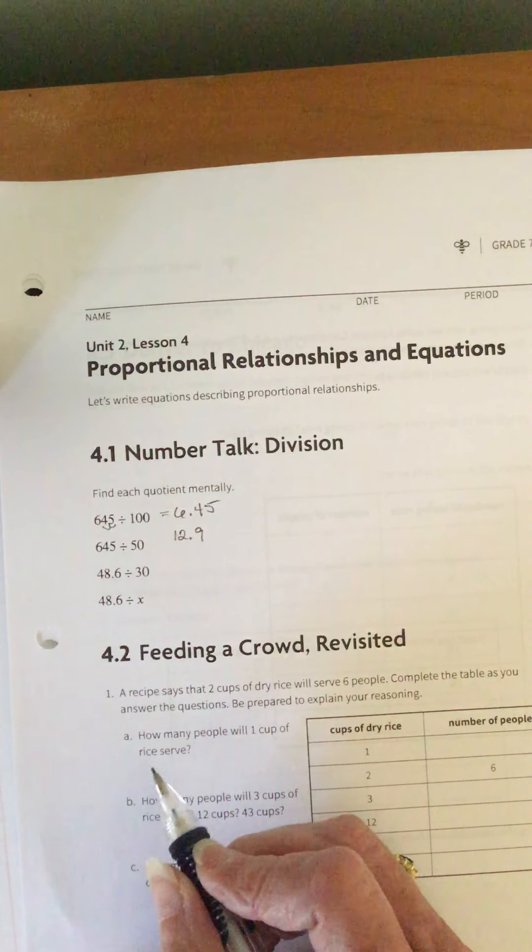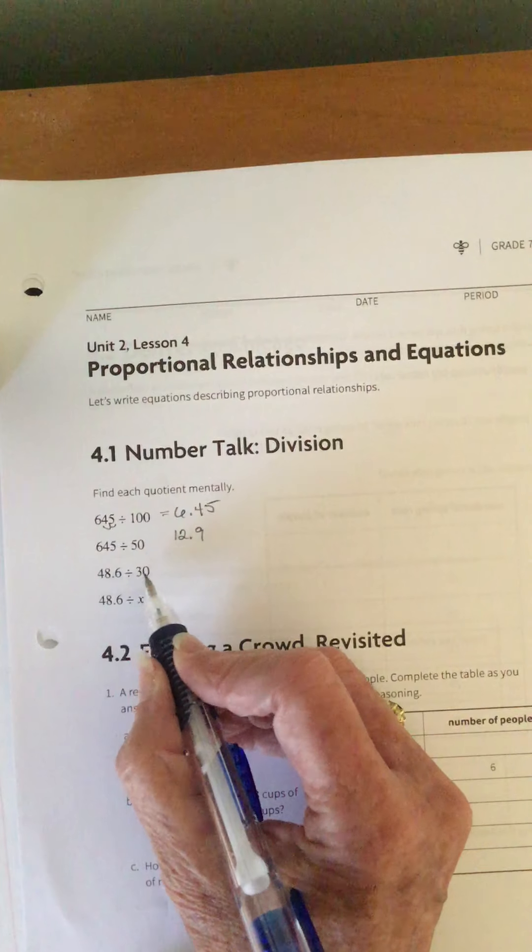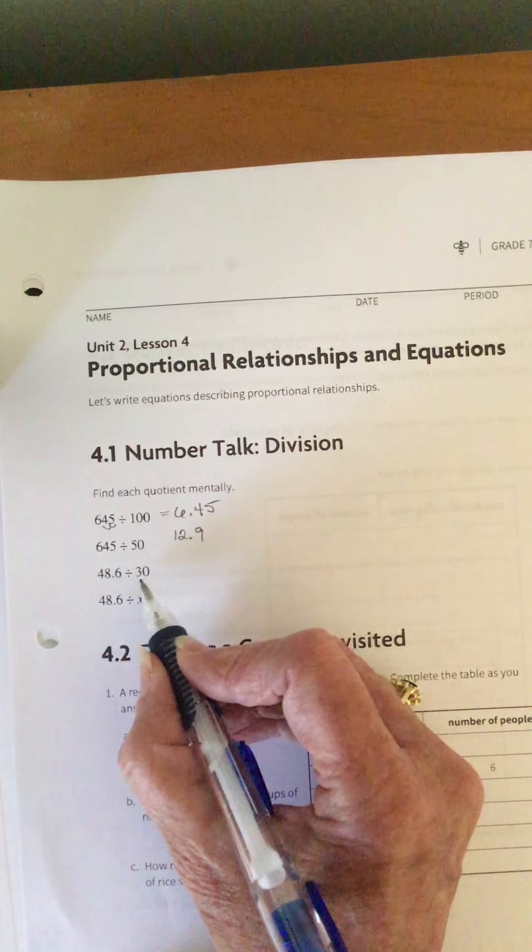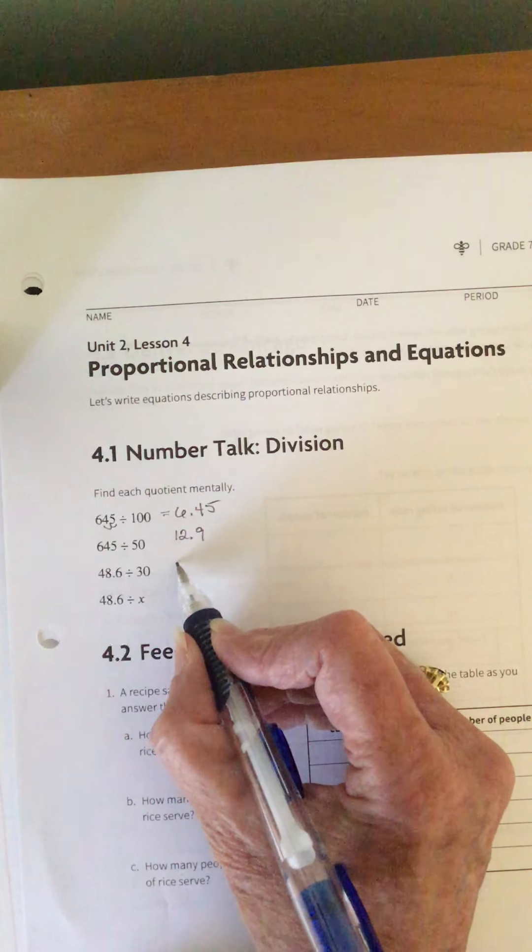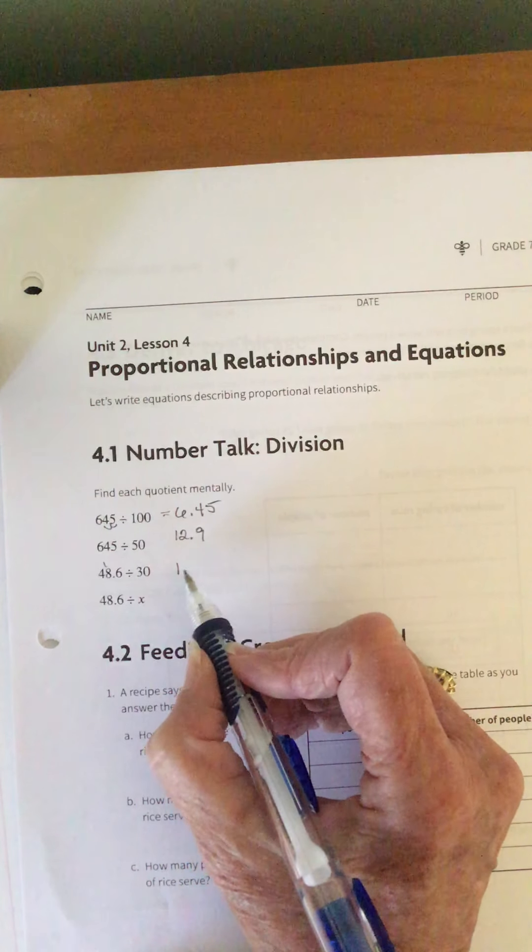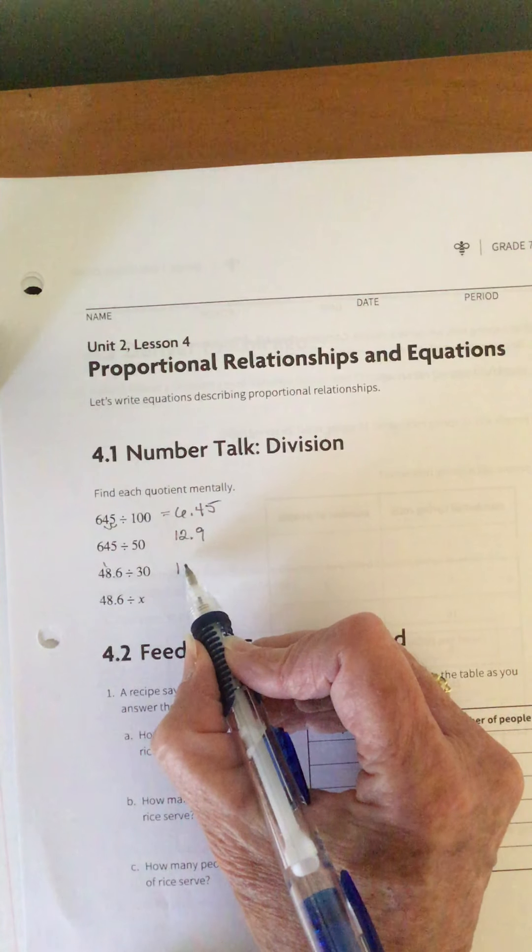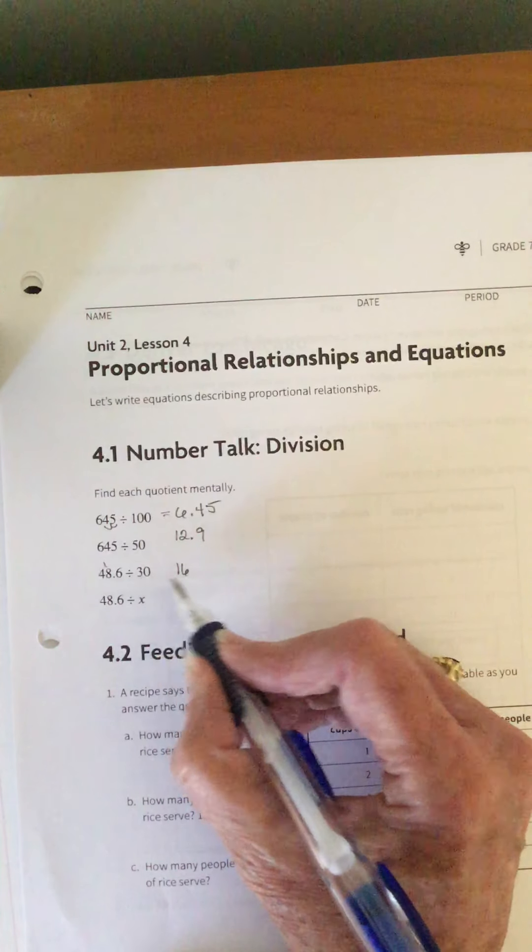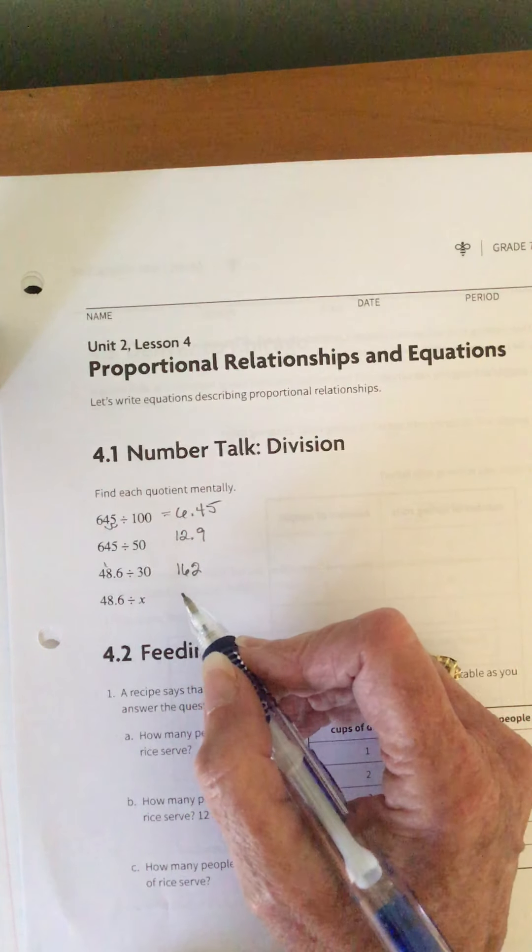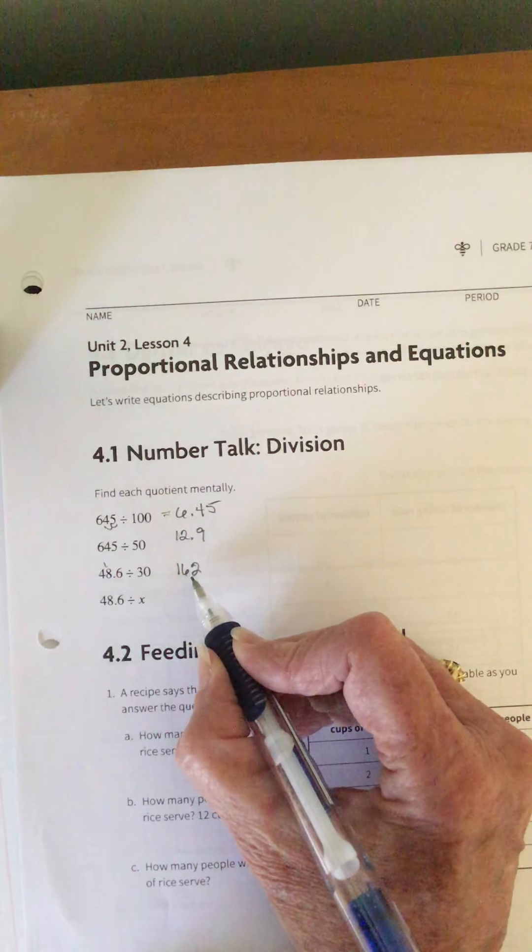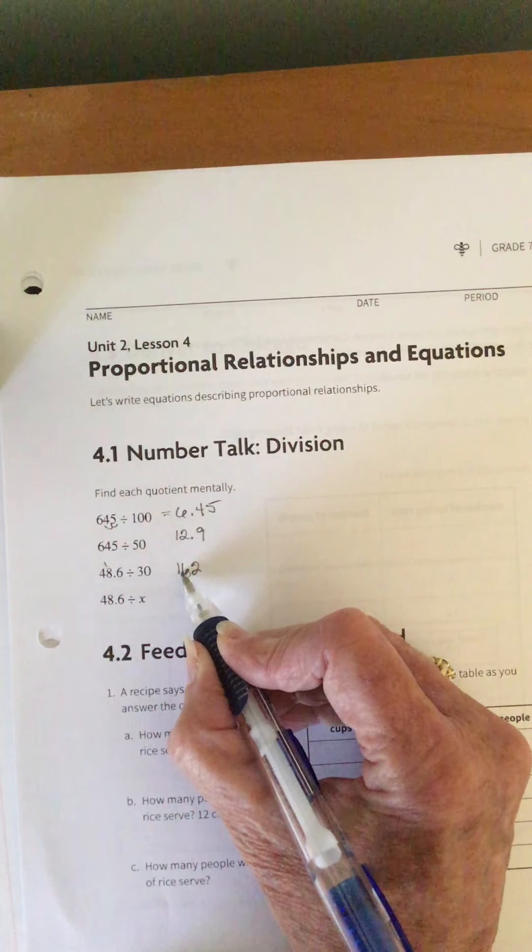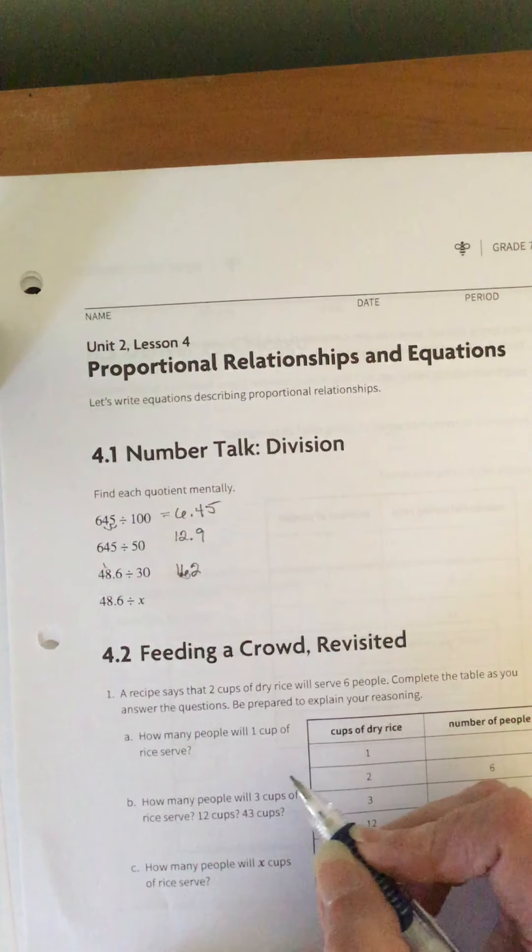Then 48 and 6 tenths divided by 30. If I look at this, then I can do 3 into 4, 8, 6. So 3 goes into 4 once with one left over, 3 goes into 18 six times, and 3 goes into 6 two times. Then I just have to decide where the decimal point goes. Well, it started out in one place, and then I'm dividing it by 10, so it's going to end up here at 1.62.